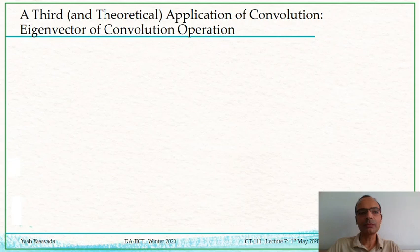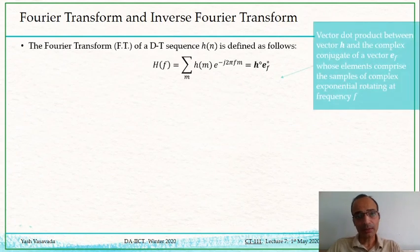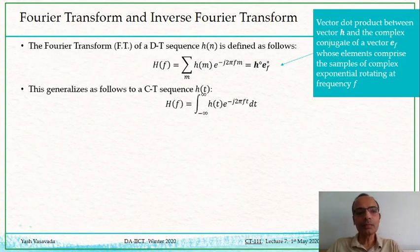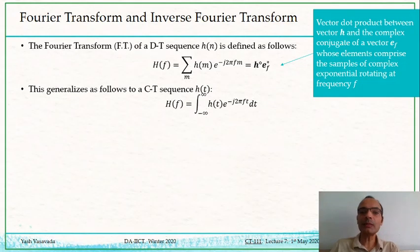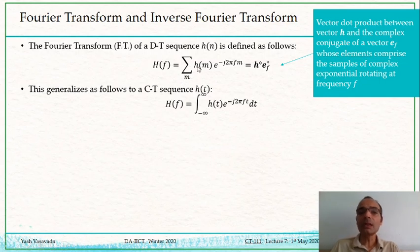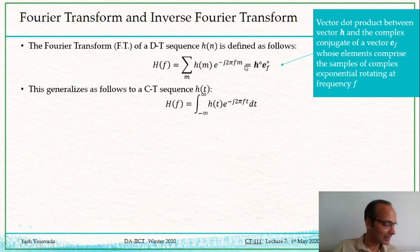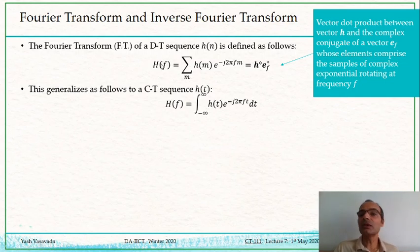Let us continue from where we had stopped last time. We were describing the Fourier transformation, and specifically we were looking at it as projecting any time domain signal — in the case of continuous time — or time domain sequence — in the case of discrete time — onto this complex exponential phasor which is rotating at a certain frequency f. That is why the output of that dot product is a function of f. If you change the frequency f, this complex exponential vector changes and you will quite possibly get a different projection and a different value of H(f).